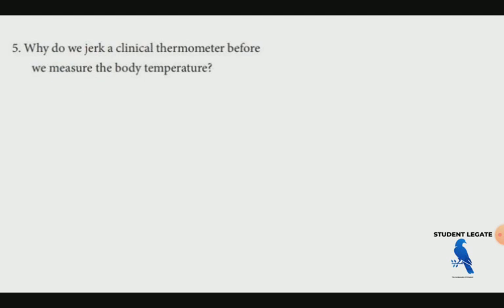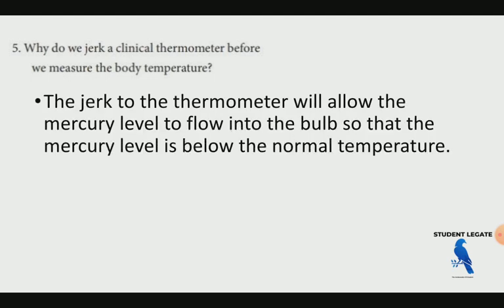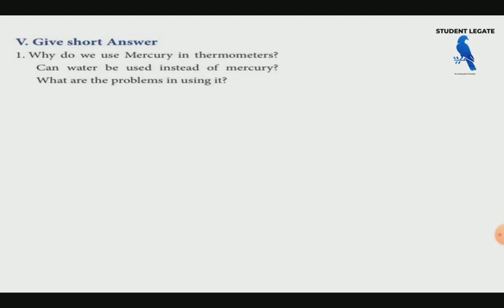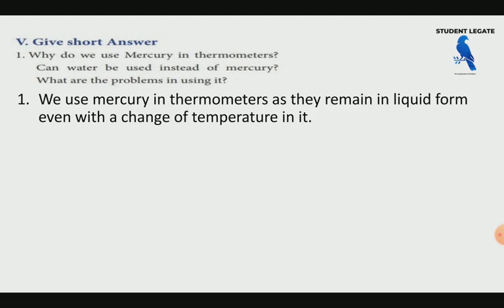Why do we jerk the clinical thermometer before measuring the human body temperature? This is done to bring the mercury back down before use. Mercury is used in thermometers because it remains in a liquid state over a wide range of temperatures.